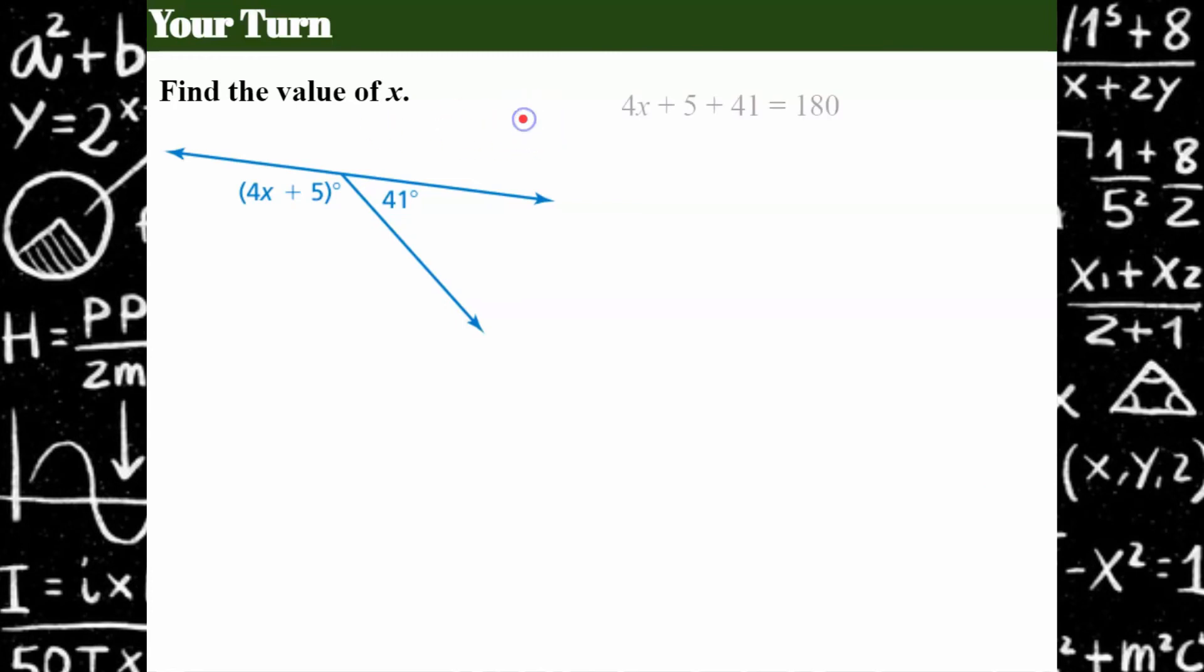So our equation is this angle 4x plus 5 plus the angle 41 form a straight angle, making them supplementary. So together, 4x plus 5 plus 41 needs to equal 180.